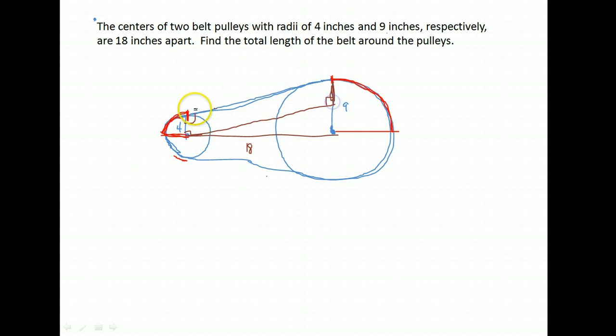If this is 4, then this would be 4. And if I can find this length, then I will know this length, because in a rectangle the opposite sides are congruent.